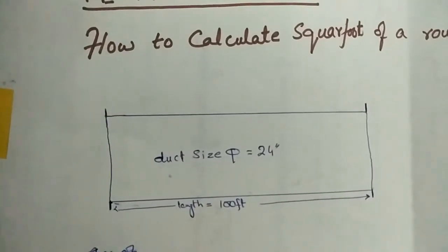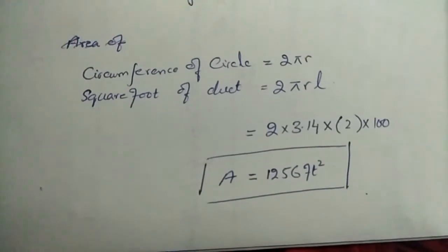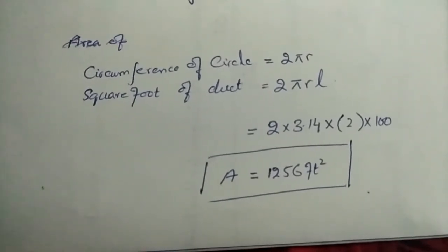has a diameter of 24 inches and a length of 100 feet. Putting these values into the formula (2 × 3.14 × (2) × 100), we get 1,256 square feet.